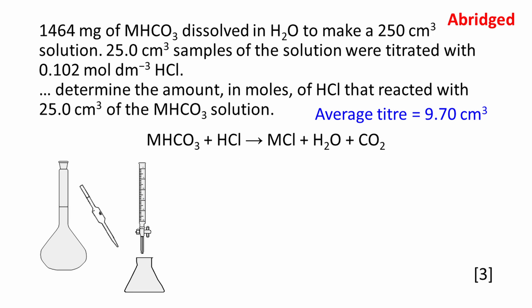Next, we have to determine the amount in moles of HCl that reacted with 25 cm³ of the MHCO3 solution. A diagram can really help to visualize where the different substances are and how to work through the calculation. The hydrochloric acid was delivered to the conical flask using a burette. The burette is highlighted in the diagram. Amount is equal to concentration multiplied by volume. Convert cm³ to dm³ to be consistent with units. The amount of HCl works out to be 9.894 times 10 to the minus 4 moles.